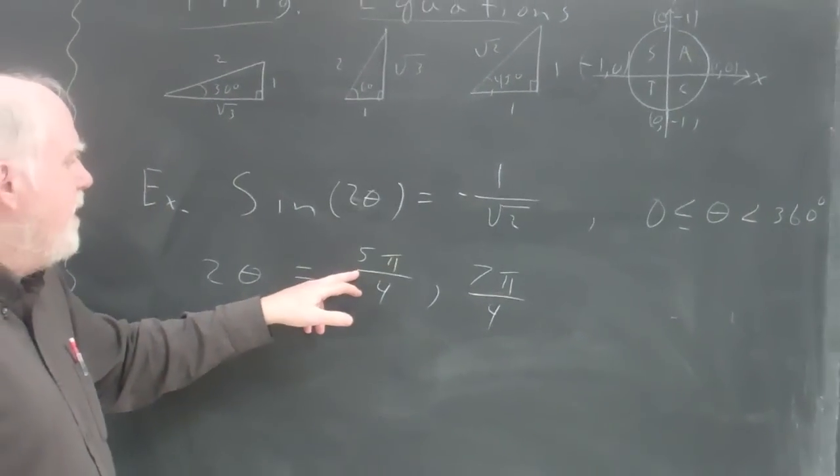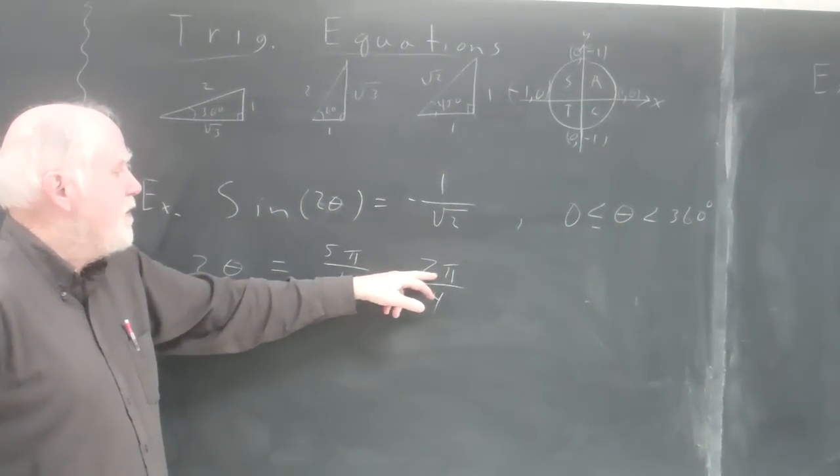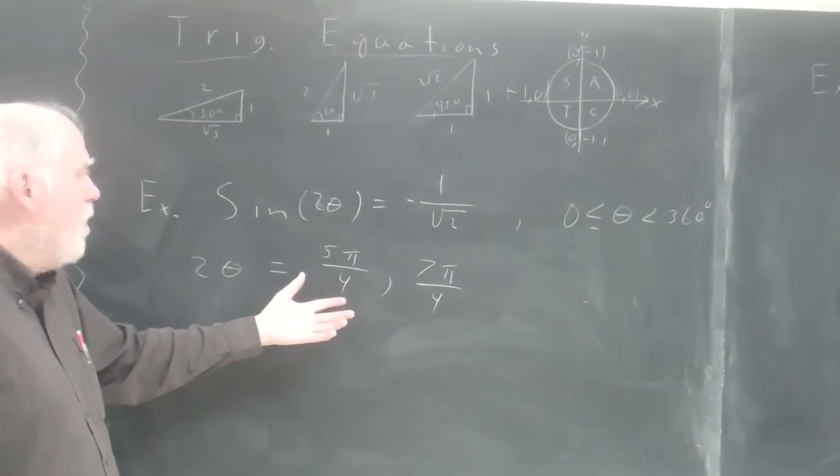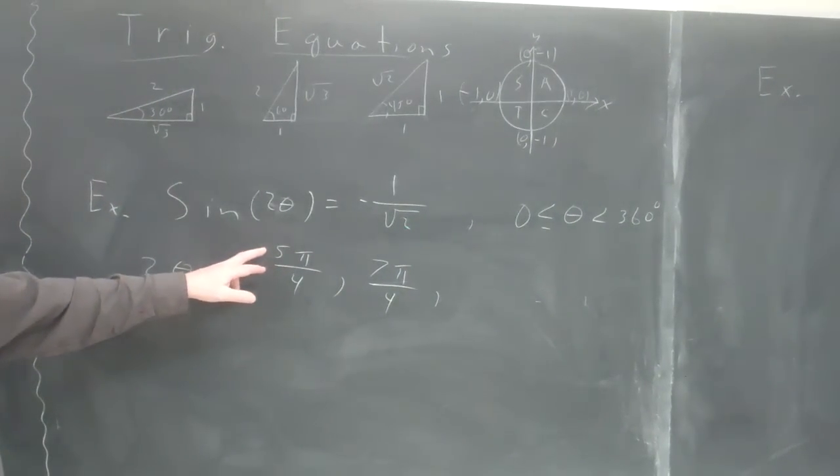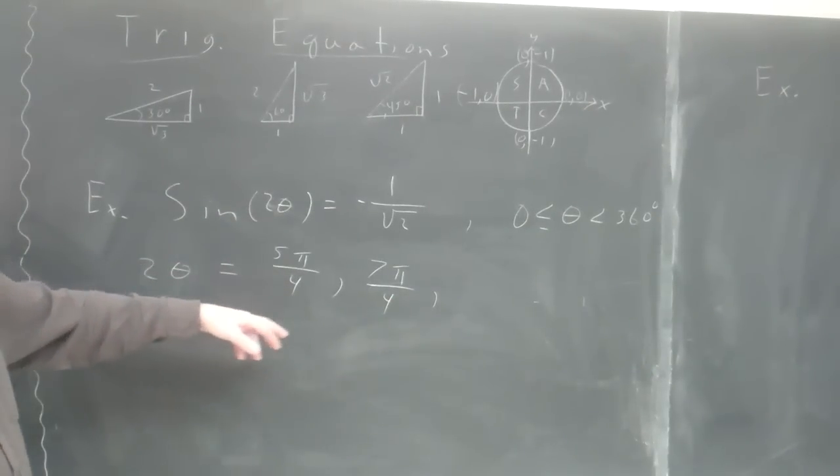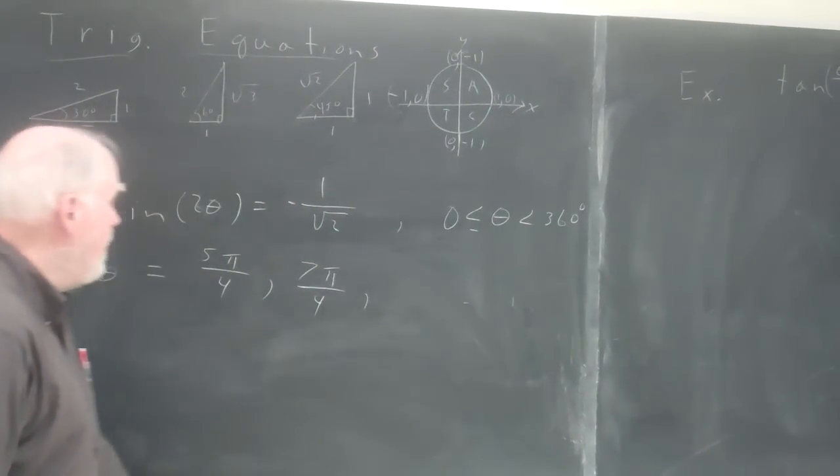If I added 360 degrees to this or 2 pi to this and 2 pi to this, I'd have two more. And you might think, well, you better not do that, because you'll have angles that are greater than 2 pi or greater than 360 degrees.